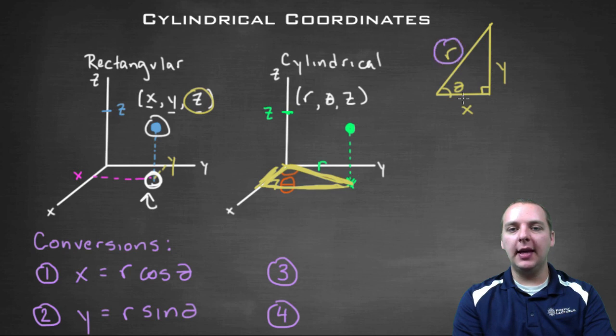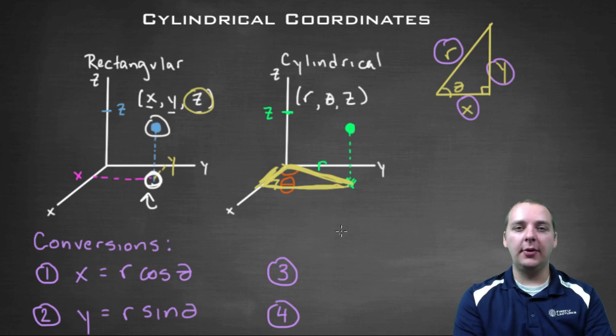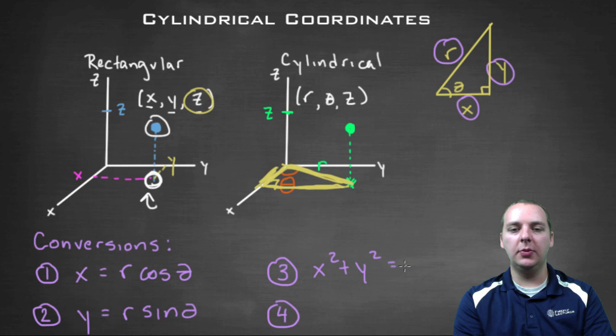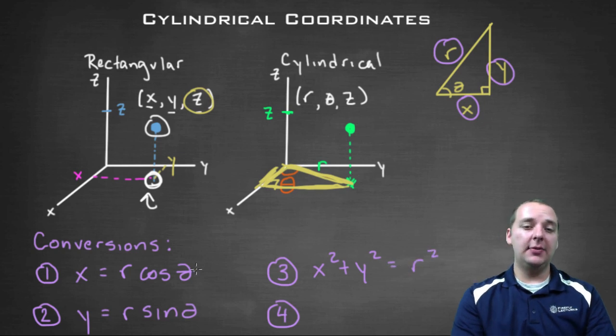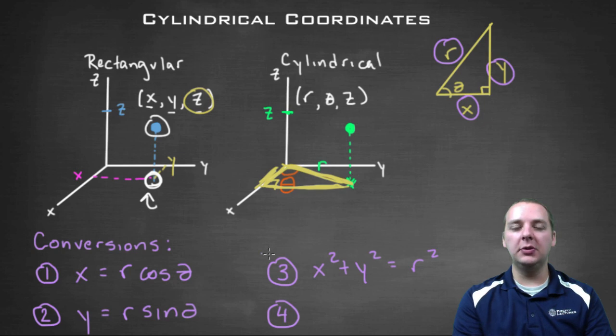There's a conversion between the x, the y, and the r, just the lengths of the triangle. That would be the Pythagorean theorem that you probably know, x squared plus y squared equals r squared. And if a lot of these look familiar, that's a good thing. These are the same conversions we used back when we studied polar form.